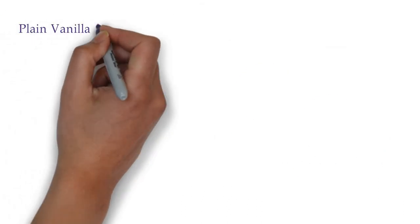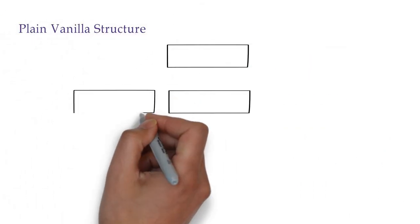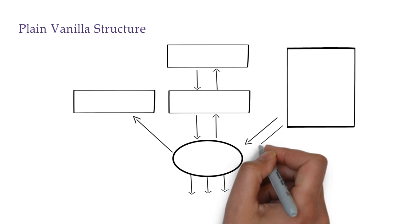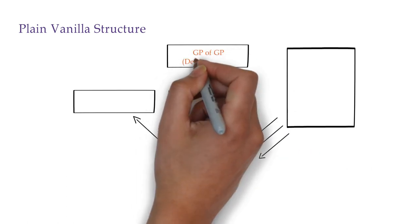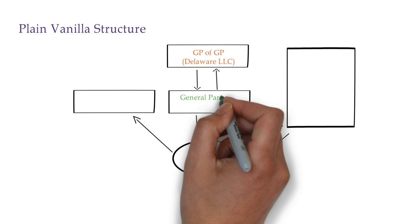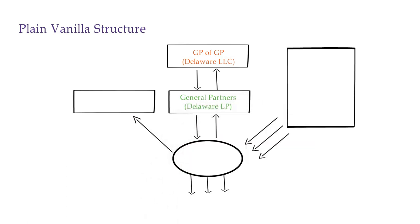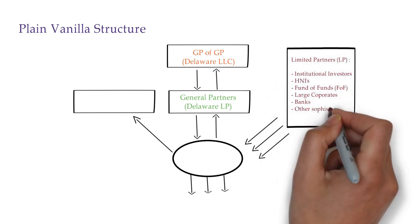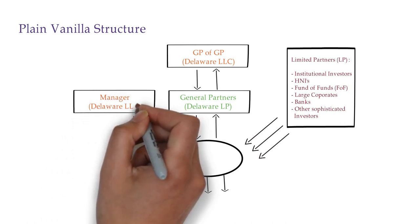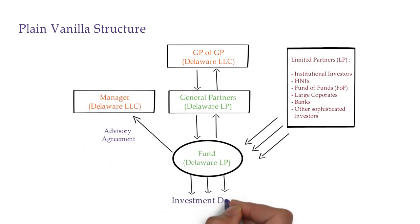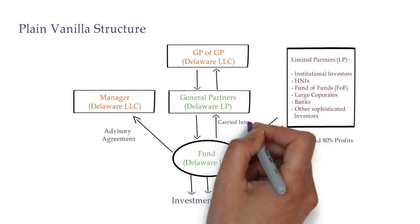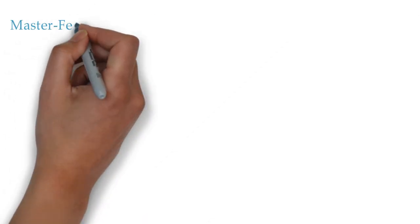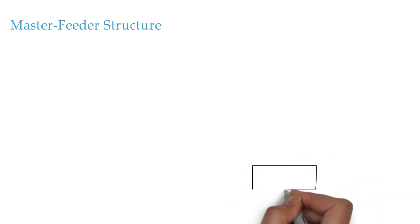Another one is the plain vanilla structure. It is the simplest form of the PE structure. To understand more clearly, we are taking an example of Delaware LLC, which is the partnership firm that creates a private equity fund — that is Delaware LP — which is regulated by the general partners. The pool is created by the limited partners, where Delaware LLC also acts as an advisor that provides services to the fund about investment deals. This is how a plain vanilla structure looks like.